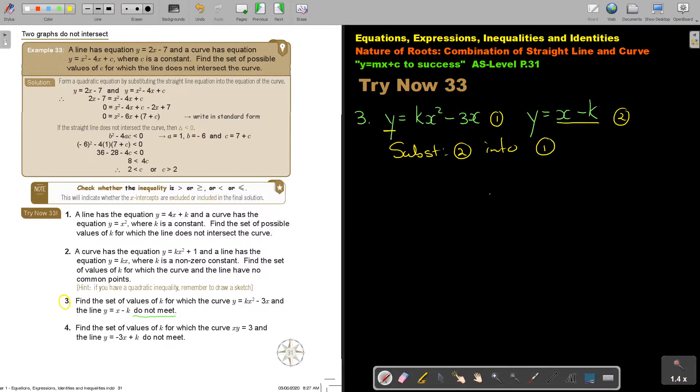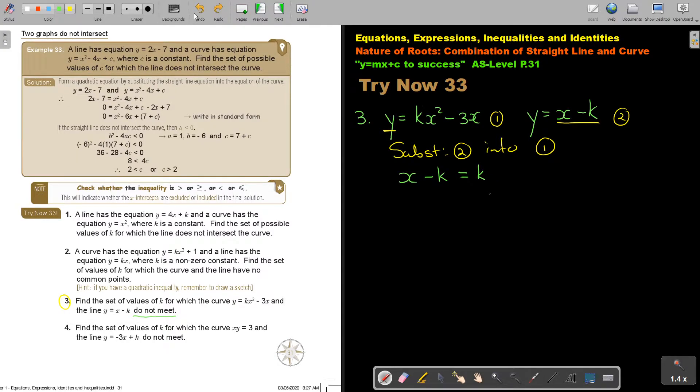I just substitute 2 into 1. So, then it will be like x minus k is equal to kx squared minus 3x. And if I simplify this, I'm going to get... So I'm going to get... It's smaller than 0. Don't forget that this is A, this is B, and this is C. Because the discriminant is B squared minus 4AC is smaller than 0. So, B squared is negative 4 squared minus 4AC.